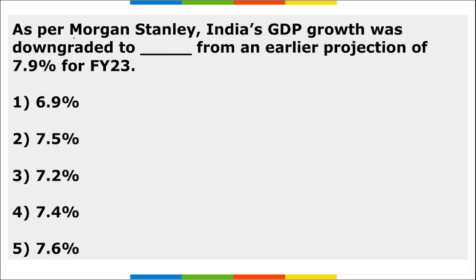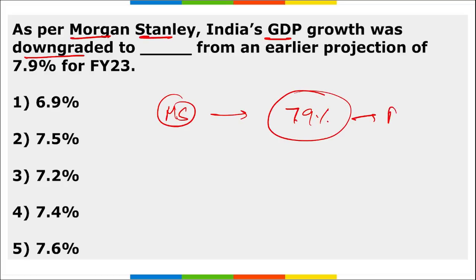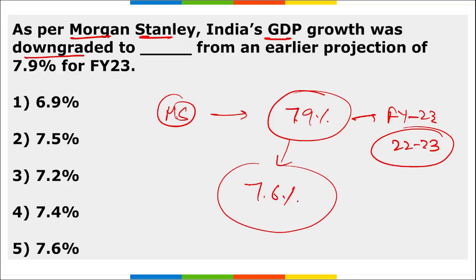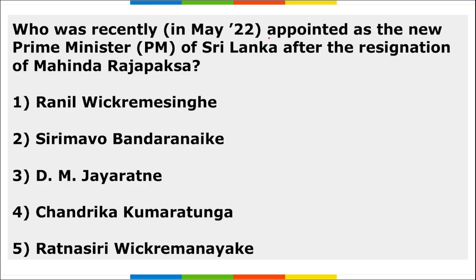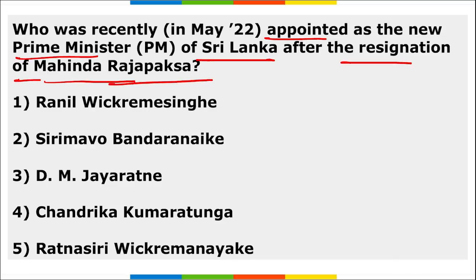According to Morgan Stanley, India's GDP growth for fiscal year 2022–23 was downgraded from 7.9% to 7.6%. Ranil Wickremesinghe was appointed as the new Prime Minister of Sri Lanka following the resignation of Mahinda Rajapaksa. Wickremesinghe has previously served as Prime Minister five times since 1993.